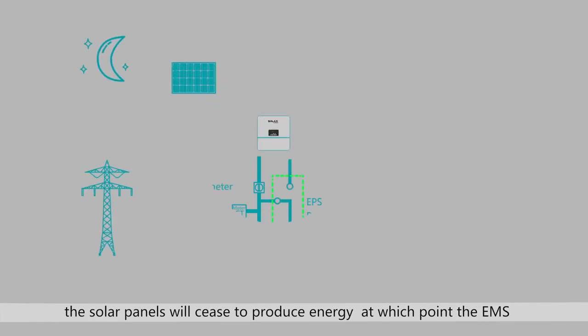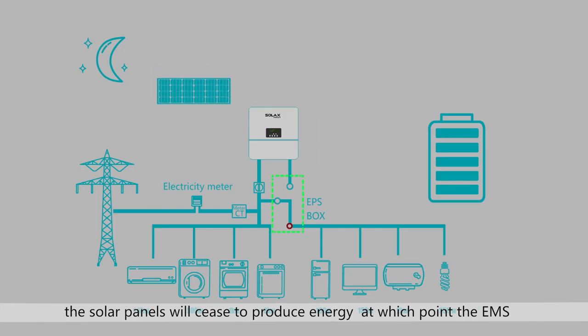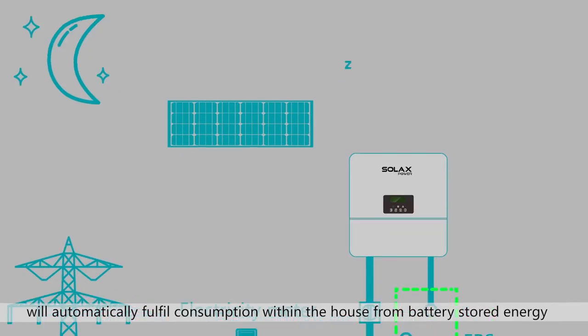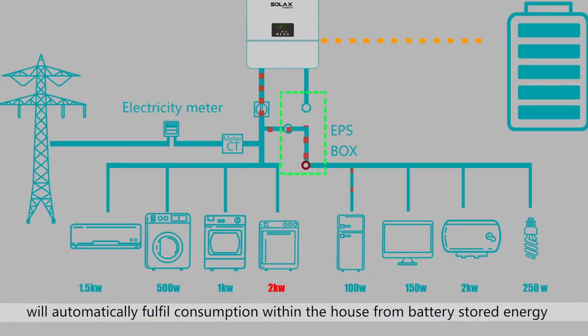As day turns to night, the solar panels will cease to produce energy, at which point the EMS will automatically fulfill consumption within the house from battery stored energy.